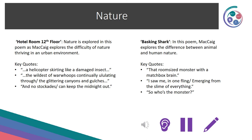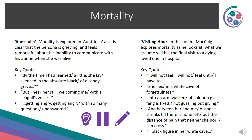In Basking Shark, McCaig explores the difference between animal and human nature. Key quotes: 'That room sized monster with a matchbox brain', 'I saw me in one fling emerging from the slime of everything', and 'So who's the monster?' We're now going to look at the theme of mortality. In Aunt Julia, mortality is explored as the persona grieves and feels remorseful about his inability to communicate with his auntie when she was alive. Key quotes: 'By the time I had learned a little, she lay silenced in the absolute black of a sandy grave', 'But I hear her still, welcoming me with a seagull's voice', and 'getting angry, with so many questions unanswered.'